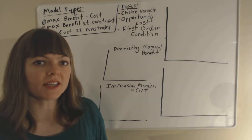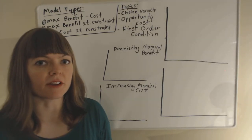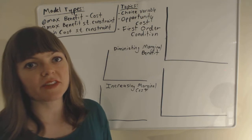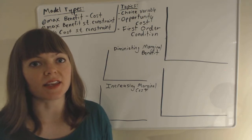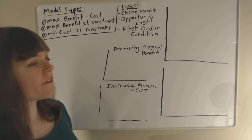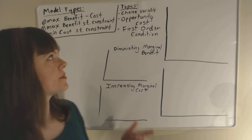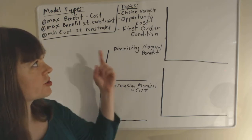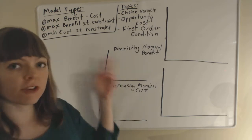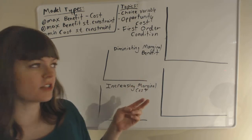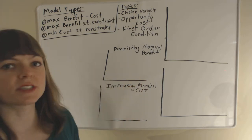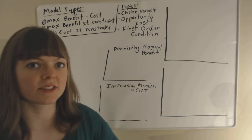I'm going over a cost-benefit model, specifically a model of the time a student spends studying. This will cover a few economic concepts: choice variables, opportunity cost, first order conditions, diminishing marginal benefits, and increasing marginal costs.